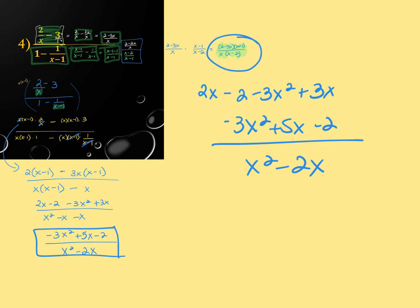My personal approach: if the denominators are single terms — like x, x squared, x, x cubed — I'd definitely use method two, multiply everything by x cubed. Everything cancels very easily. If it's a combination of variables and expressions like x and (x-1), I typically pick method one, but you get to choose.